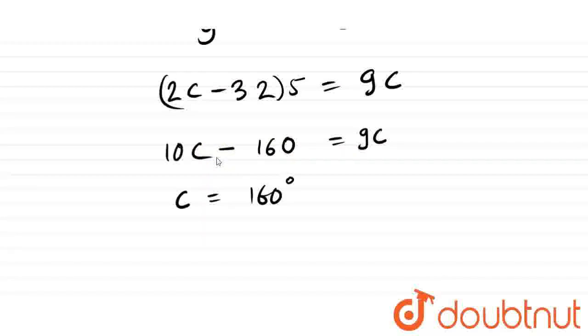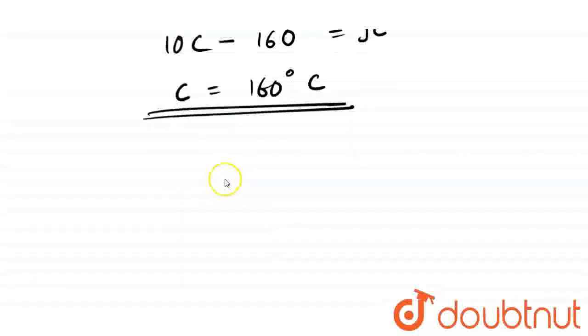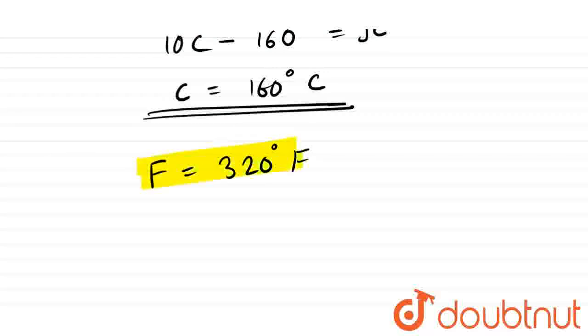So temperature in centigrade is 160 degree centigrade. So if we check, that temperature in Fahrenheit is 320 degree Fahrenheit. So double is 320 Fahrenheit. The temperature in Fahrenheit is double of Celsius. That temperature is 160 degree centigrade.